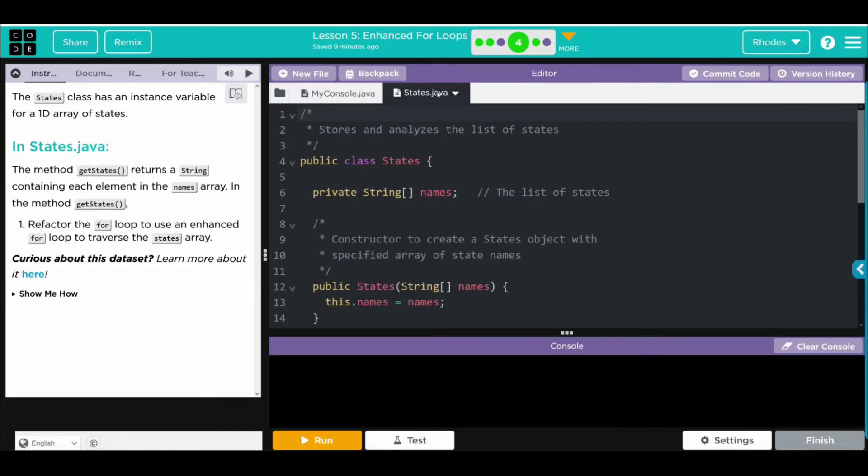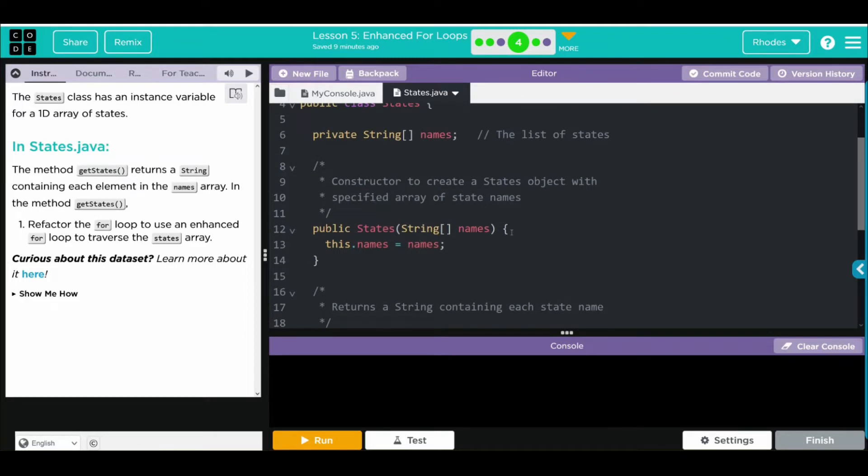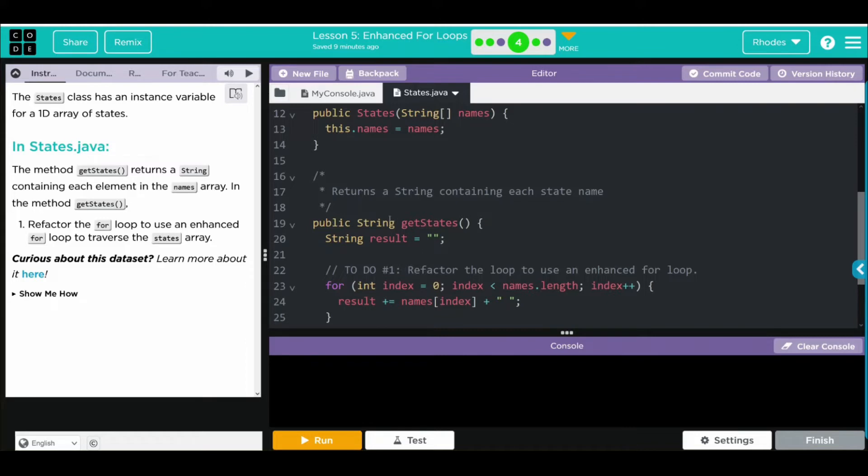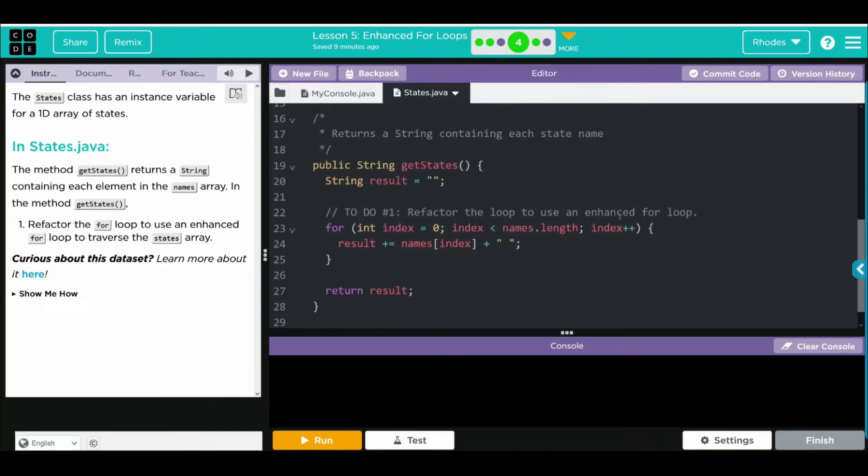Let's look at states. We have one private array called names. One constructor, states, has one parameter. We have our get method here, getStates. We're creating a string result, it is empty. We have our for loop here, and this looks like the loop I've seen for this entire unit. Creating an index, setting it to zero, long as our index is less than the names array length, we're going to get results, which is blank. What we're going to do is we're going to add each element names to that result. Got a little space so the numbers don't squish. At the end, we're going to return the entire result. What we want to do is refactor this to an enhanced for loop.